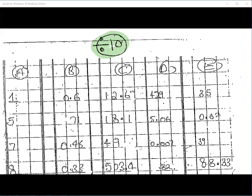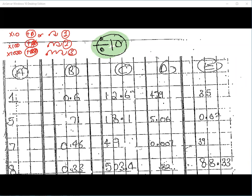When you multiply a whole number by 10 you add one zero, for 100 you add two zeros, and for 1,000 you add three zeros. Fantastic — that's a quick review of what we've just done. And what happens if it's a decimal number? For 10 you move the decimal one place to the right, for 100 you move the decimal two places to the right, and for 1,000 you move the decimal three places to the right.